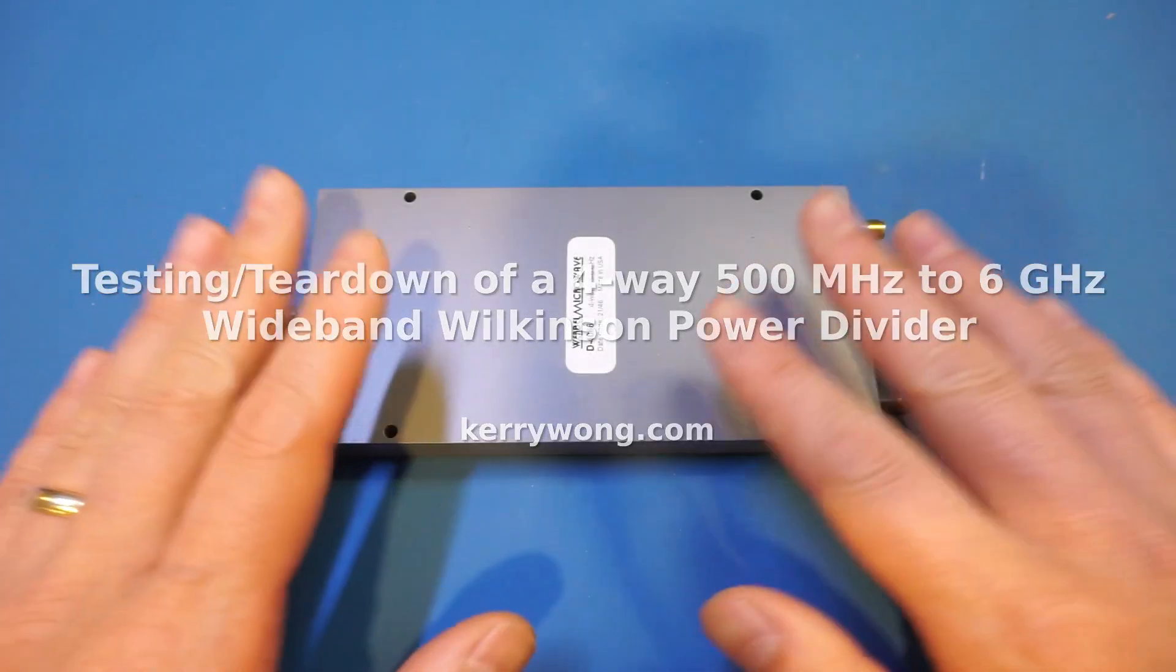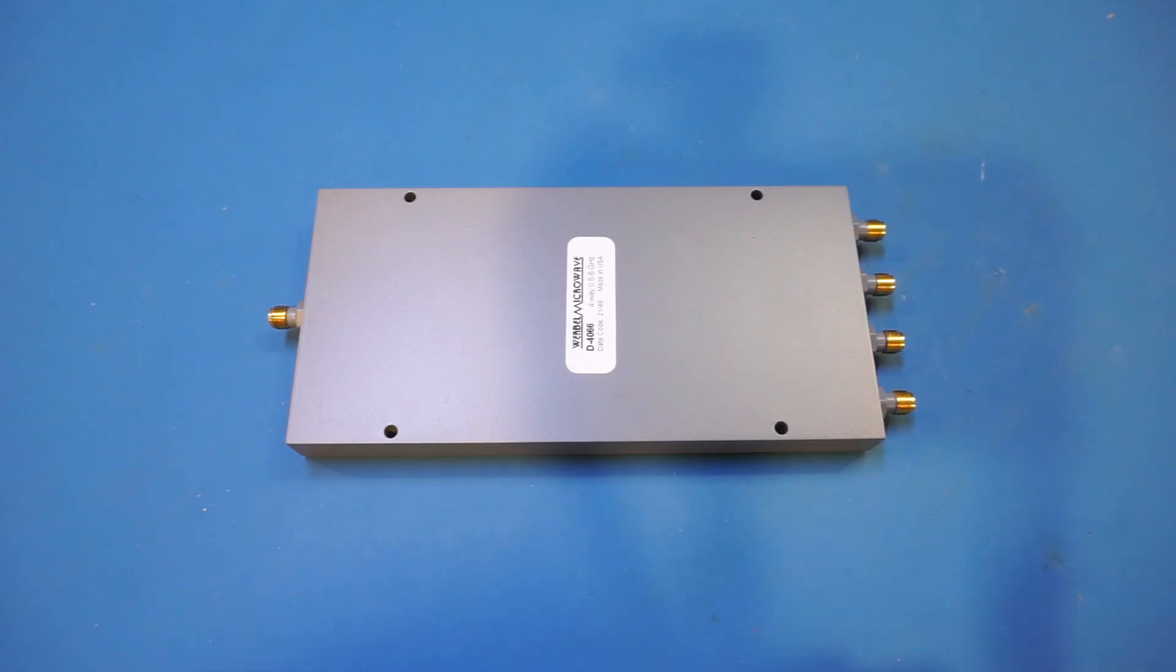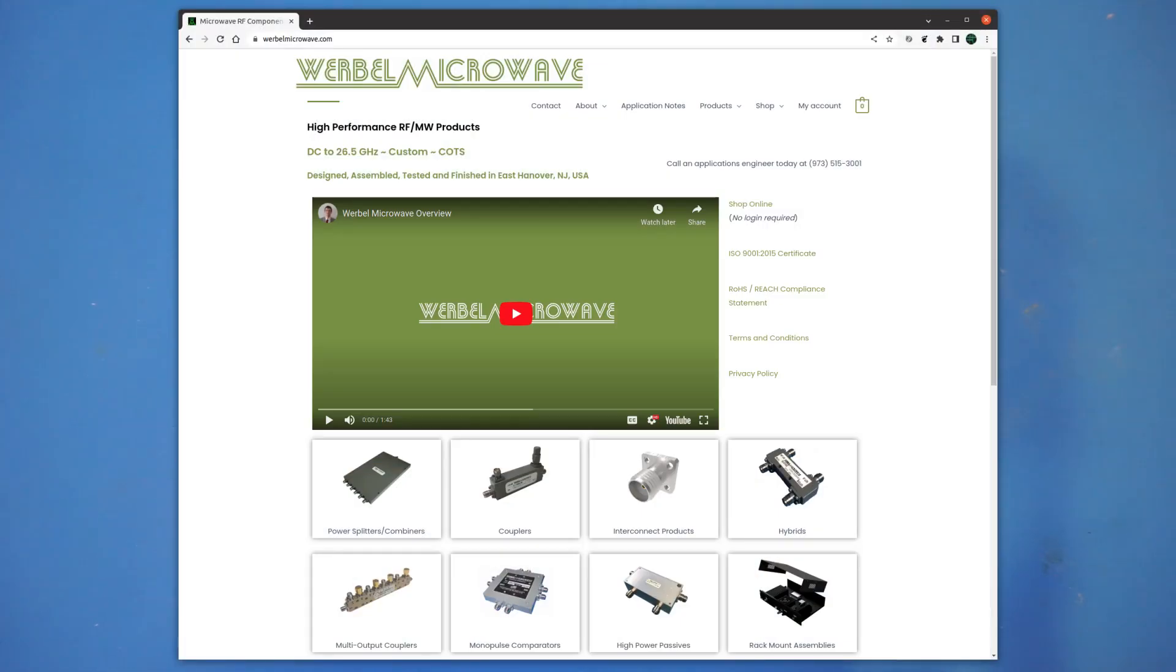Hi, what I have on the workbench today is a four-way power divider and combiner that operates between 500 megahertz and 6 gigahertz. A quick shout out to the good folks at Verbal Microwave for sending me this.